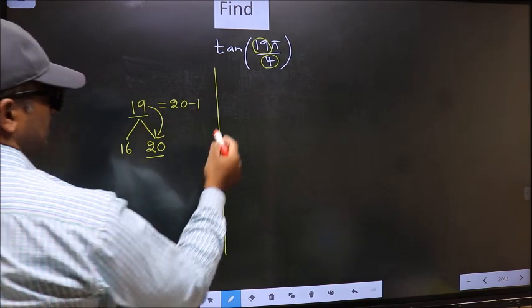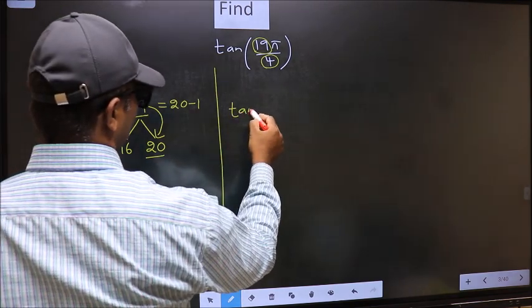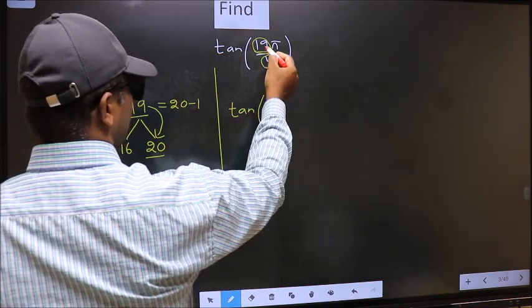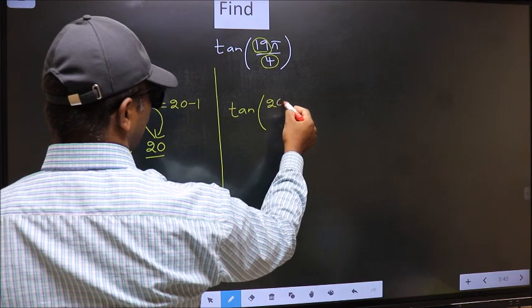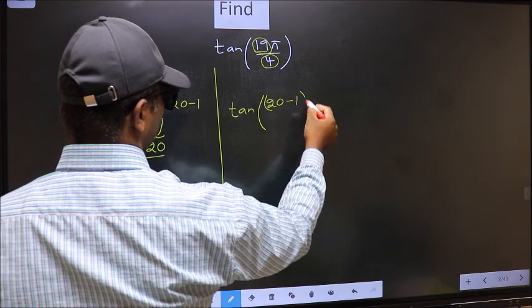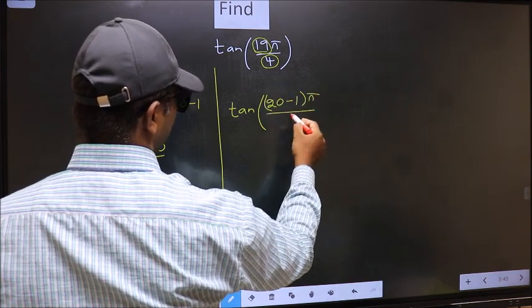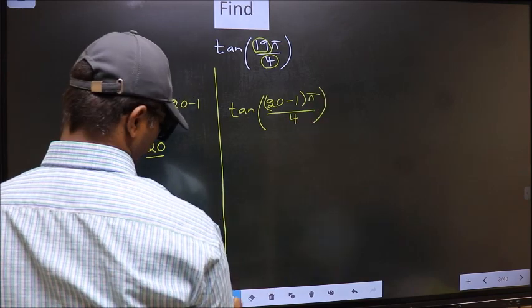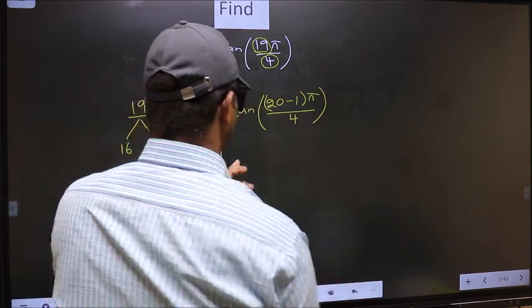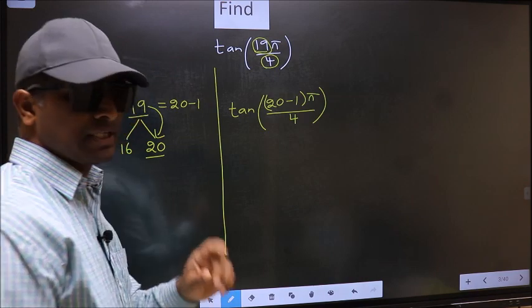So 19 should now be written as 20 minus 1. So this will become tan. In place of 19, now I write 20 minus 1, pi by 4. This is your step 1.